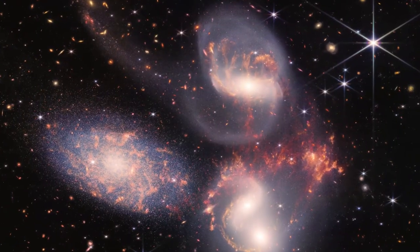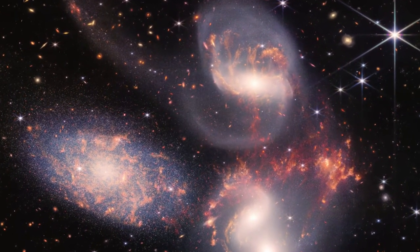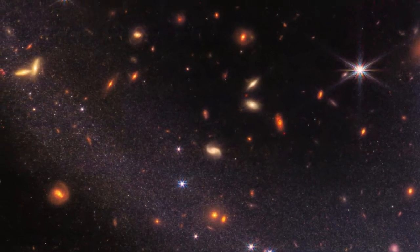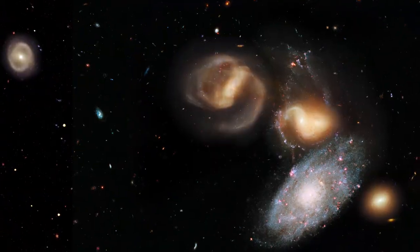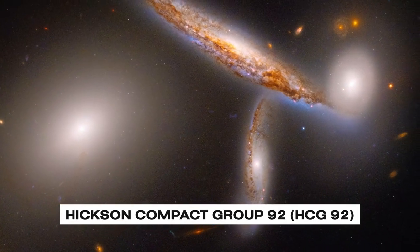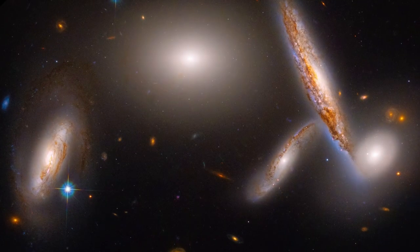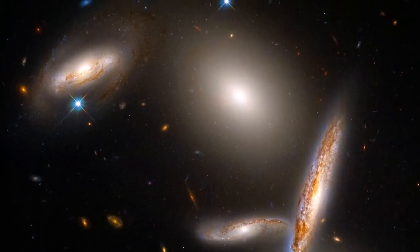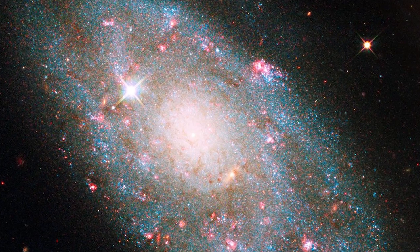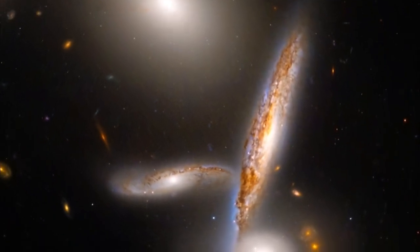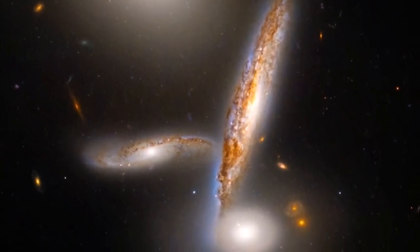And hold onto your seat as NGC 7318B crashes through the cluster, creating colossal shockwaves that redefine cosmic drama. Stefan's Quintet, also known as the Hickson Compact Group 92, HCG92, showcases its cosmic ballet. Four galaxies are locked in an intricate dance of cosmic proportions, while the leftmost galaxy, NGC 7320, stands out in the foreground, adding a touch of cosmic intrigue.